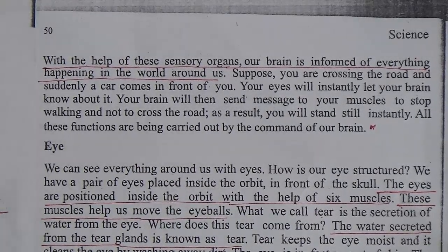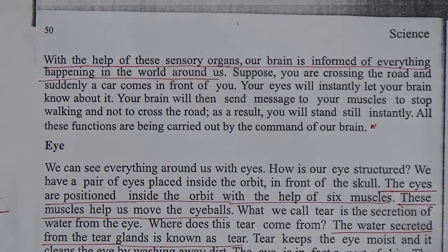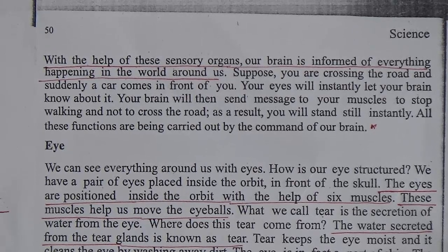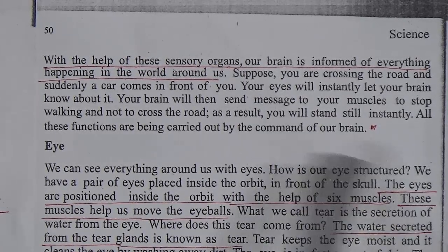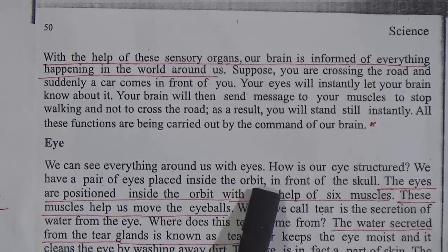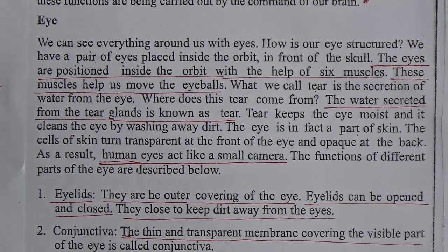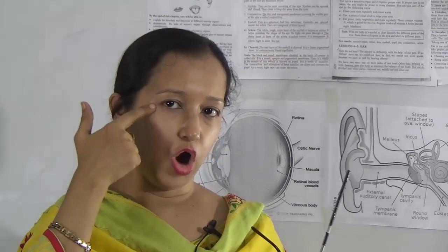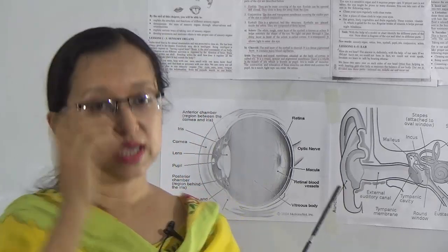The eye is the most important sensory organ — with the help of our eyes we can see this beautiful world. We have a pair of eyes placed inside the orbit in front of the skull. The eyes are positioned inside the orbit with the help of six muscles. The orbit is a space in our facial skull structure where our eyes are placed, and they are connected to our brain via six muscles.